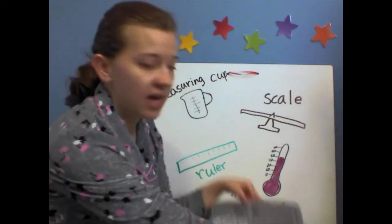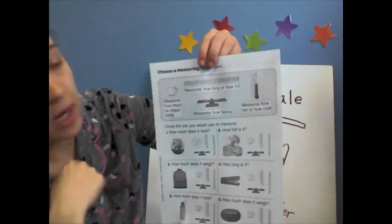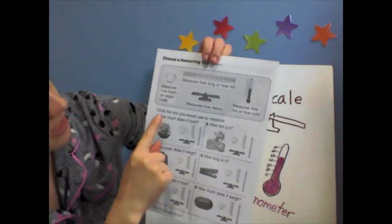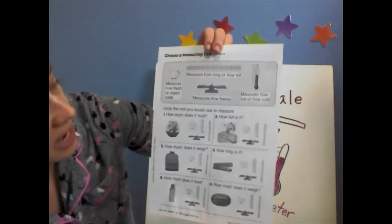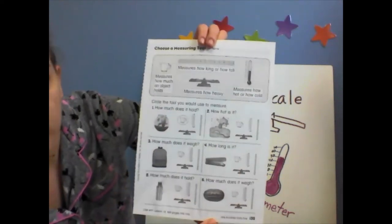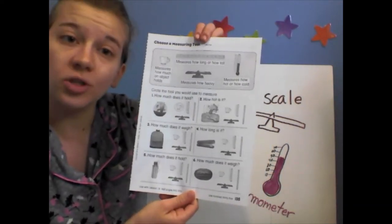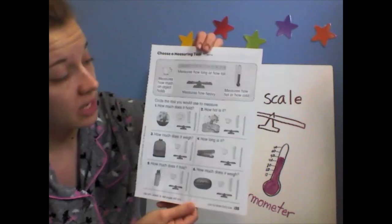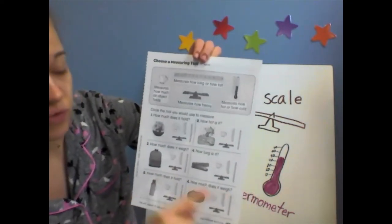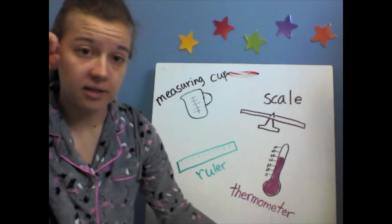You're gonna do a worksheet that looks like this. It shows you the different tools for measurement right up at the top — their pictures are a little better than mine. It says circle the tool you would use to measure. It has a question and shows you an object. For example, this one says how much does it hold with a picture of a fishbowl. You have to decide which tool you would use, then do the same for each question, just like we did in this lesson today.